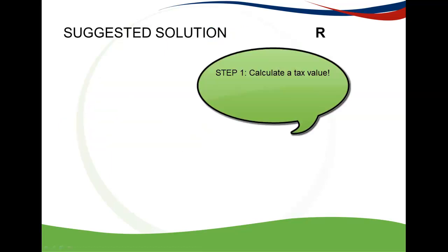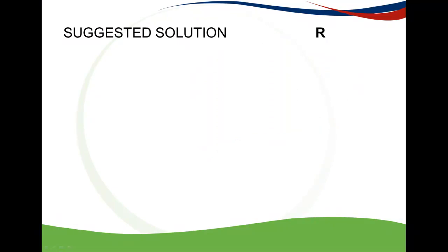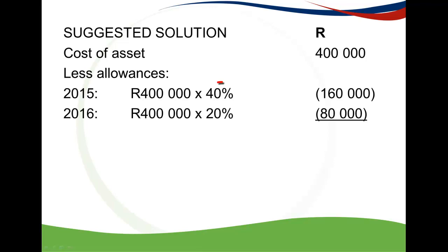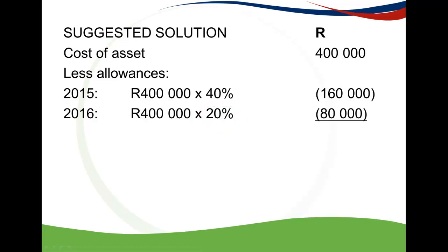First, we calculate the tax value to compare it to the selling price. We start with the cost of the asset and deduct all allowances granted. Because the asset was purchased in the 2015 year of assessment, you get a 40% allowance as it is a new manufacturing machine. In the 2016 year of assessment you get another 20% allowance, and remember this allowance is not apportioned, so you still get the full allowance even though you sold it. The tax value equals R160,000.